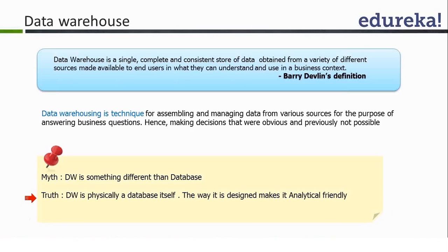Examples of the data warehouse: a telecom company can put all the customer billing information, an insurance company can put all the policy information of different policyholders in a data warehouse, or a sales company can put the sales information about different products in a data warehouse for timely reporting. Different organizations will use it in different ways.